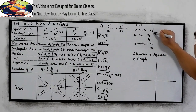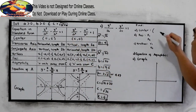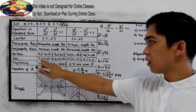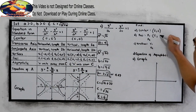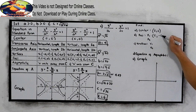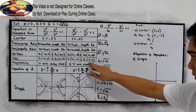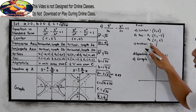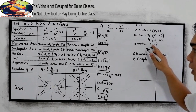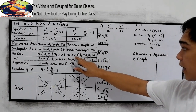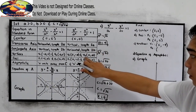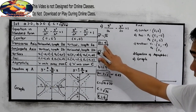For our center, that is automatically 0, 0. For our f sub 1, it is at 0, negative c, so 0, negative 6. For our f sub 2, it is 0, positive c, so 0, positive 6. For our vertex, it is 0, positive a, which is 0, positive 4.